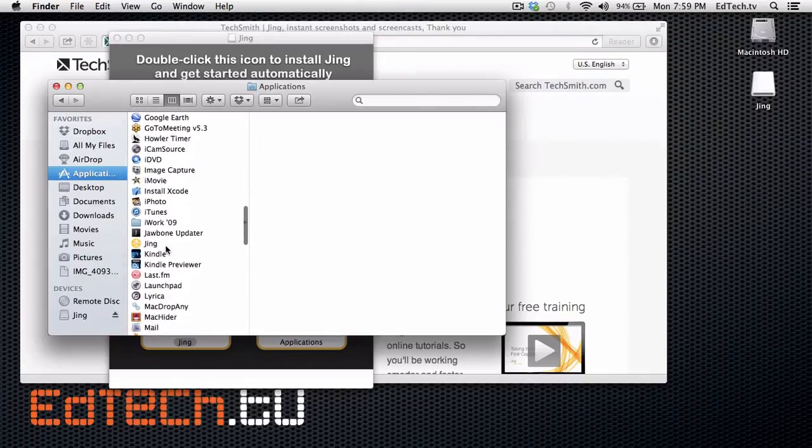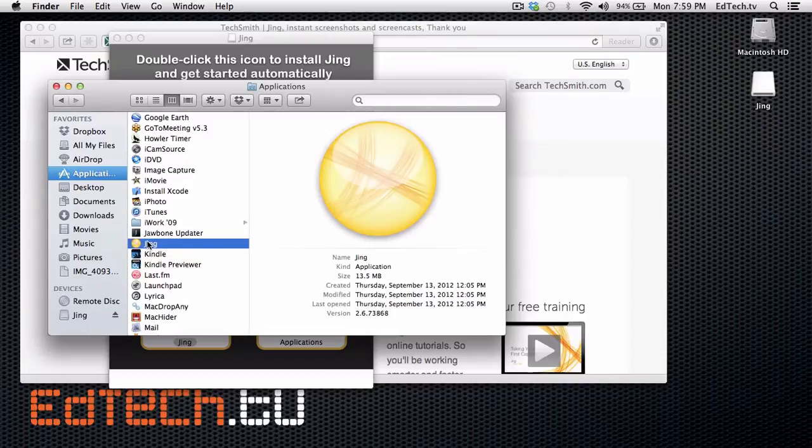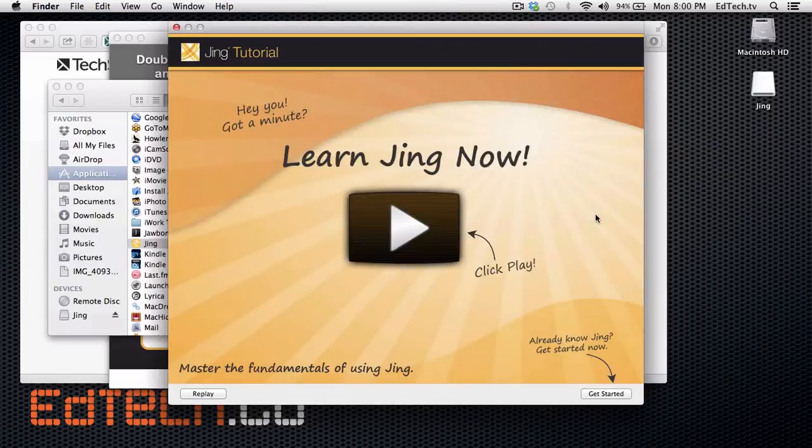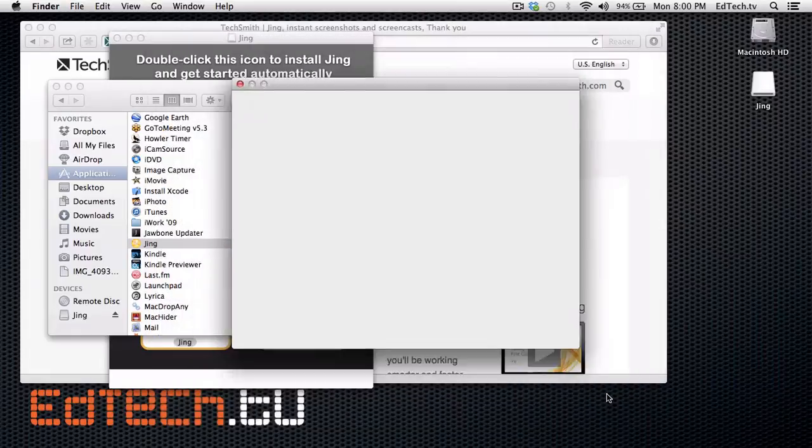Now I can go find Jing in my list of applications. Here it is. Yes, open it. Now Jing is really easy to use. You can watch the videos on how to do it, and that's what I'm going to show you how to do right here.